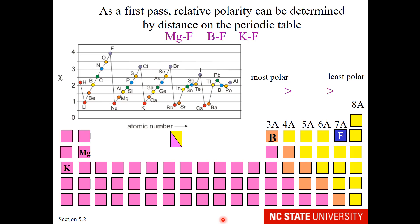Now, in general, one can just look at the periodic table and go by distance to determine electronegativity differences. The further apart things are on the periodic table, the greater their electronegativity difference.